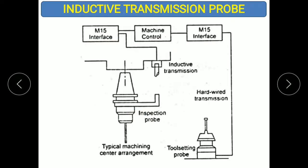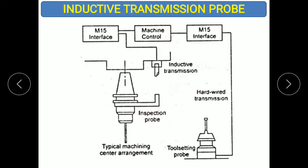The inductive transmission probe is shown here with its circuit diagram — an electronic circuit diagram showing the machining center arrangement. This includes the inspection probe, which comes in contact with the workpiece, and the tool setting probe. There is also a wire transmission system, along with the induction probe and the inductive transmission components.